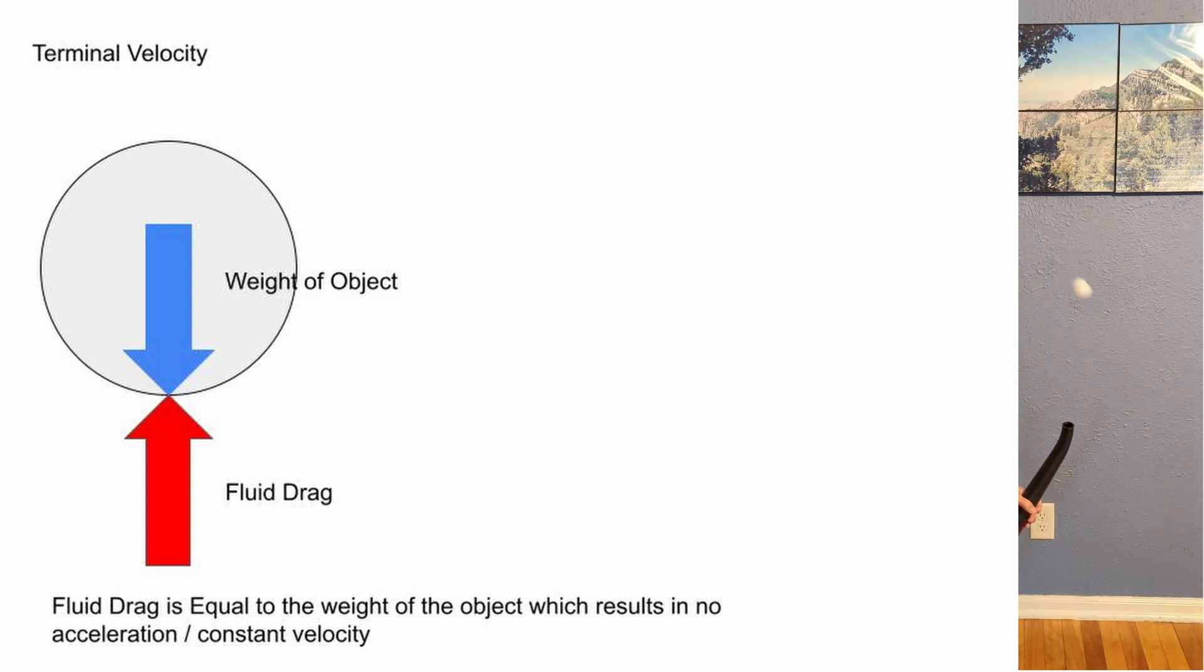Terminal velocity is when the drag force from the air particles hitting the object cancels out the acceleration due to gravity. The object maintains a constant velocity and this is known as terminal velocity. You can see this happening in the leaf blower stream when the ping pong ball appears to be floating.